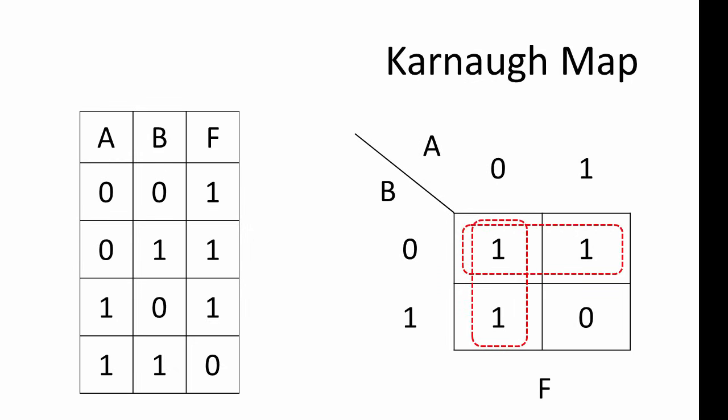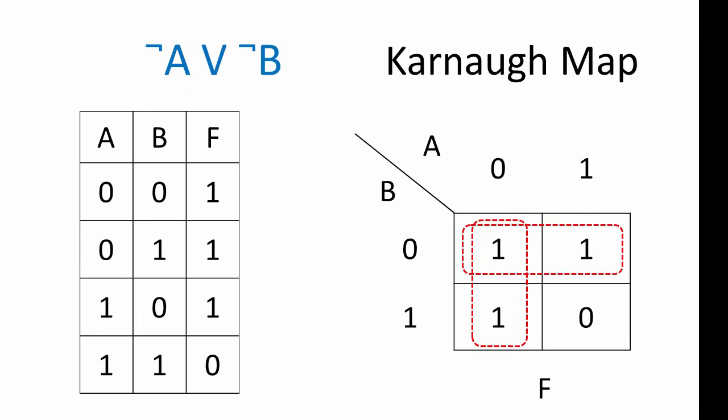Let's consider one more example with two variables. Here's the K-map which matches this truth table. We have two groups here. The ones in the vertical group are always the opposite of input A, so they are related to it — this group represents NOT A. The ones in the horizontal group are always the opposite of input B, so this group represents NOT B. Hence, this particular K-map represents the function NOT A or NOT B. You may have already recognised that this is the truth table of a NAND gate.